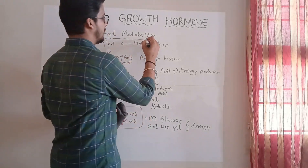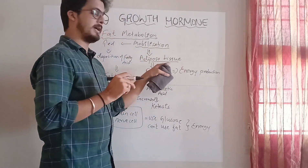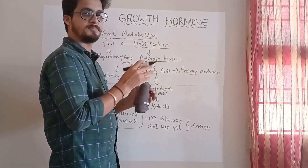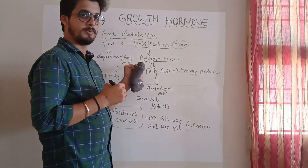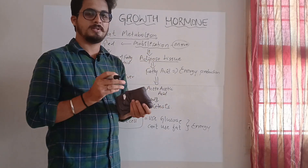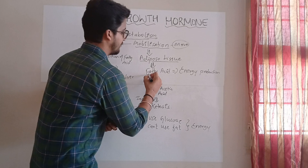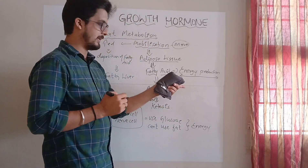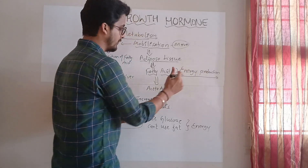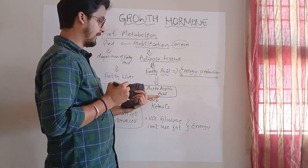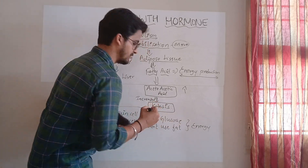Next, fat metabolism. The core action is mobilization of fat. Fat usually accumulates in the liver and adipose tissue. Growth hormone mobilizes this fat — mobilization meaning movement. Normally, glucose is the first energy source used. But growth hormone causes fatty acids to be used for energy production instead. The excessive production of acetoacetic acid increases in the blood, and a condition called ketosis is obtained.